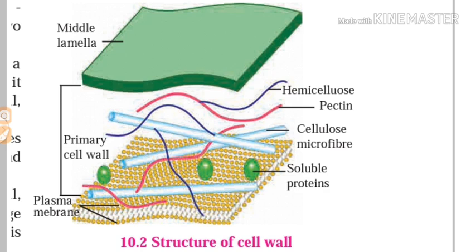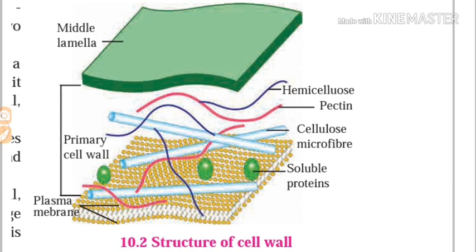Due to this selective permeability, useful molecules such as water, salts, and oxygen enter the cell, while carbon dioxide exits the cell. If any changes occur outside the cell, the cellular environment does not change due to the plasma membrane. This condition is called homeostasis.